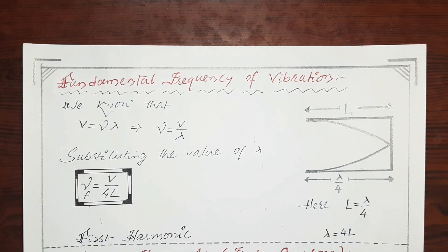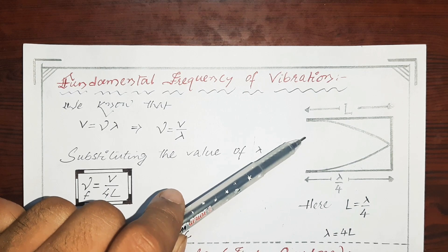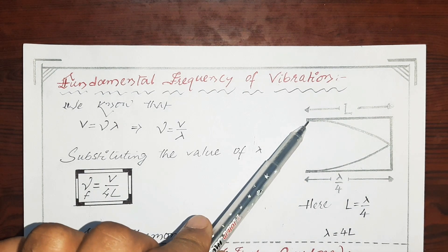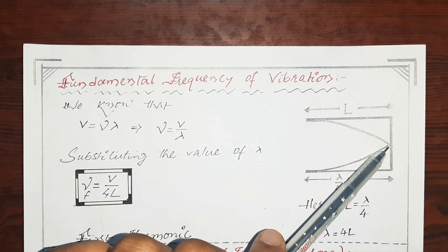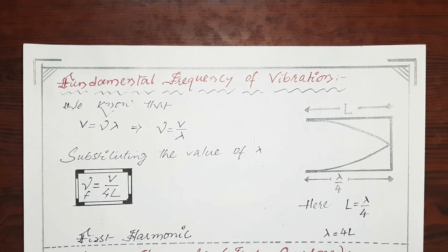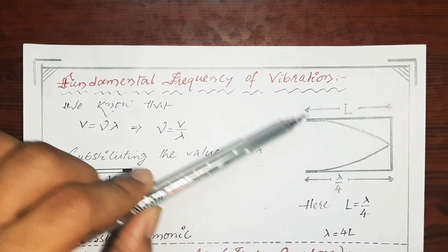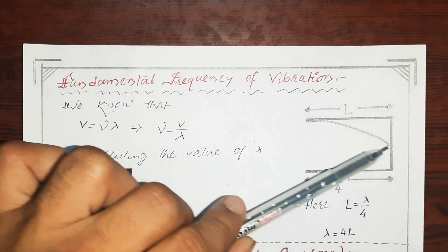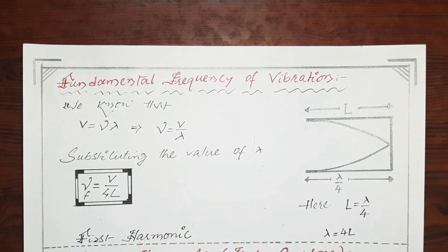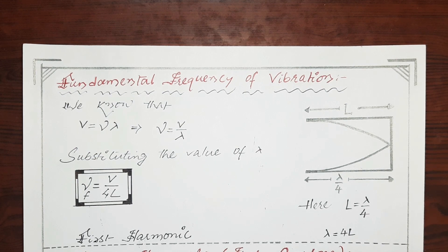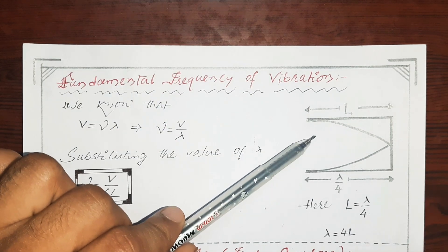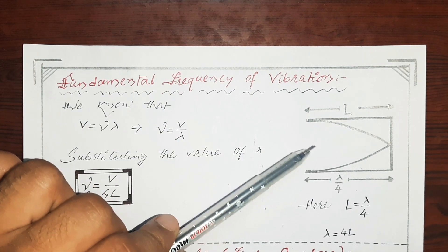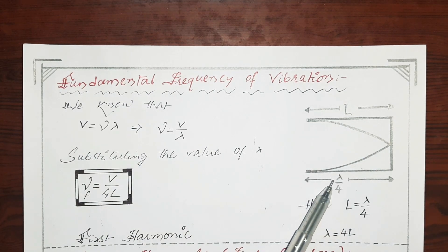So let's begin with the derivation of fundamental frequency of vibration in case of a closed pipe. As you see here, this is a closed pipe of length L and if you send a progressive wave from the open end, it travels towards the closed end, reflects back and forms the stationary wave. In this case, an antinode is formed at the open end as the particles are free to vibrate and they will have the maximum displacement. At the closed end, particles are not able to move so displacement is zero and a node is formed here. So this is the minimum possible distance between an antinode and a node.